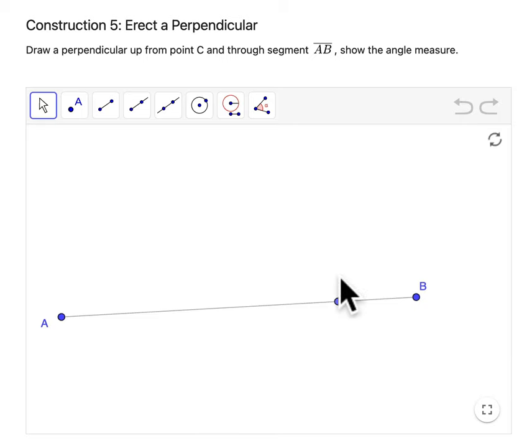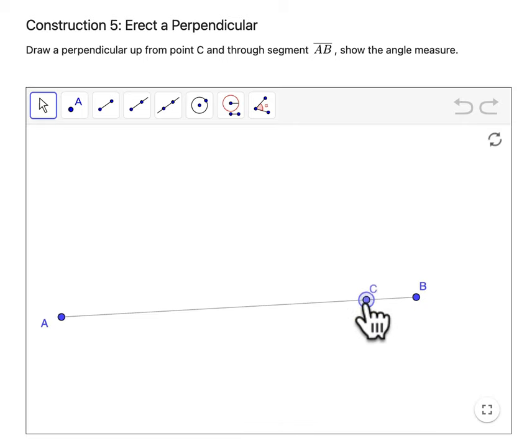Now, point C is on AB, right? And it's not necessarily in the middle. It's just somewhere along the line. So I encourage you to move it around and try it at different locations.